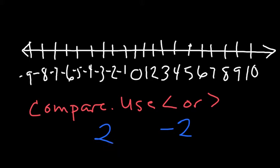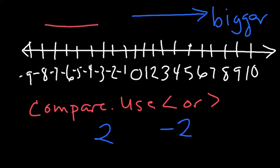And if you need the number line to help you, remember, as you go this way on the number line, as you travel towards the right, that's this direction, numbers get bigger, numbers get greater. As you travel the other way on the number line, numbers get smaller.